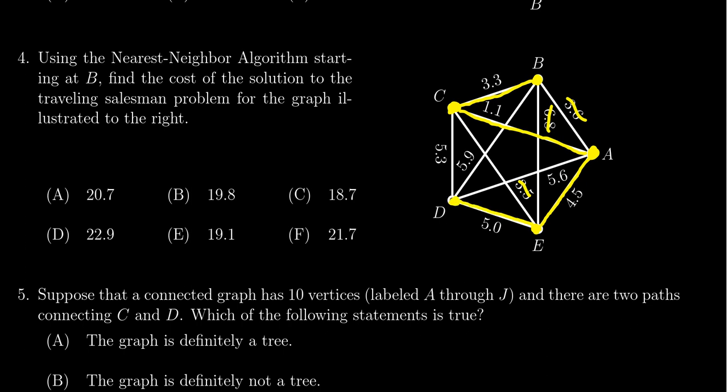Now that's the last vertex, we got to go back home. So then we're going to connect the dots here and that's our circuit. Let's add these things together. We have 3.3 plus 1.1 plus 4.5 plus 5.0 plus 5.9. Adding those together, you end up with 19.8, and so we see that the correct answer is choice B.